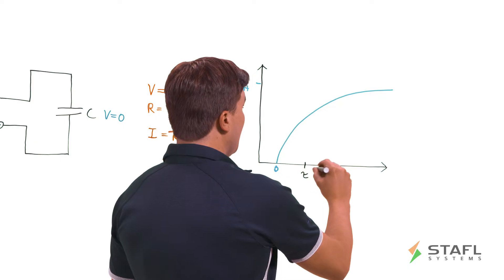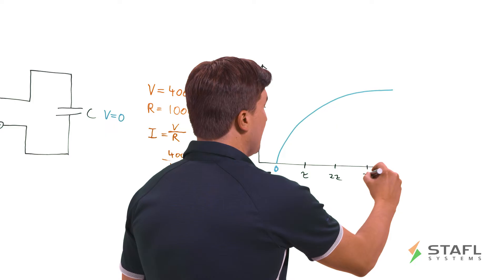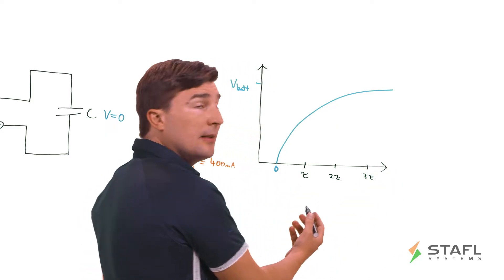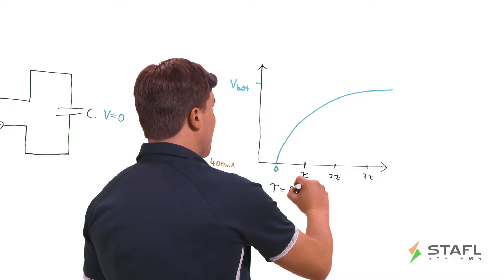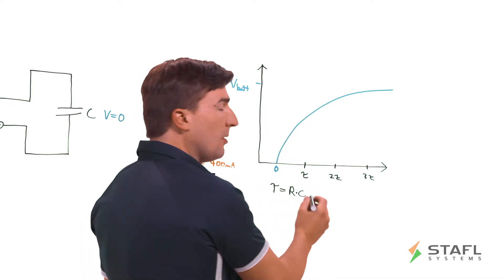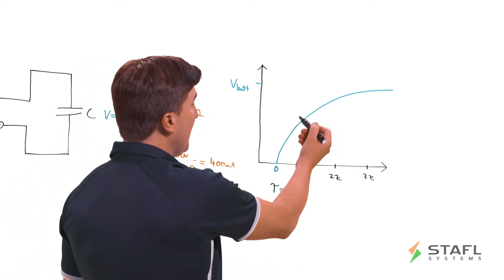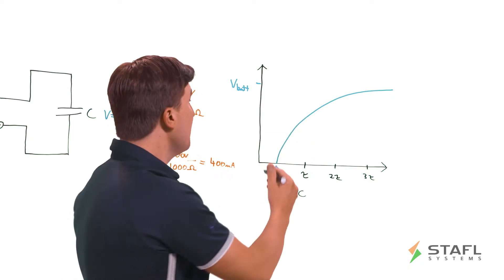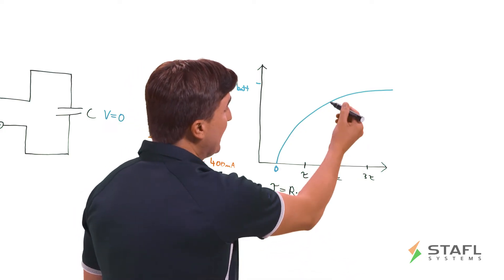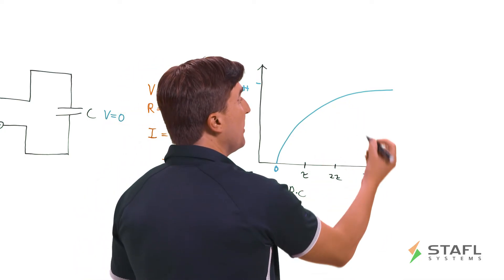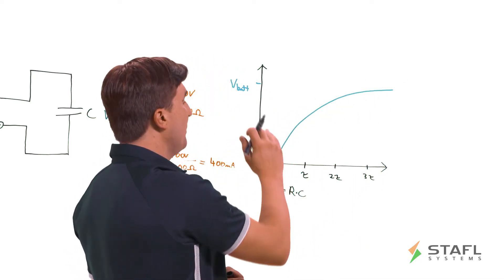Well, RC curves are dictated by their time constants or tau. And a time constant is determined by the resistance times the capacitance. So this is called an RC time constant. One tau or one time constant is approximately 63% of the battery voltage. Two time constants is approximately 87% and then three time constants is approximately 95%. And on and on it gets closer asymptotically to the battery voltage.